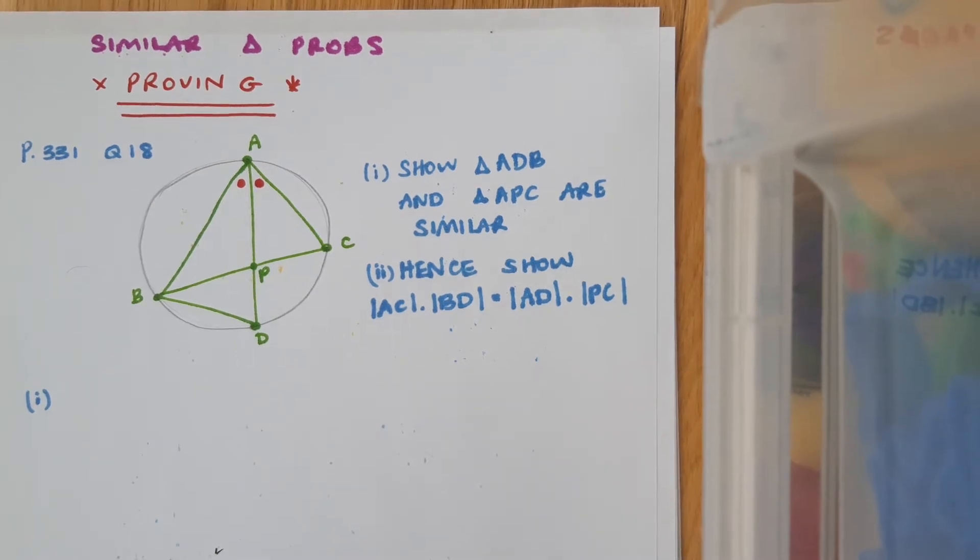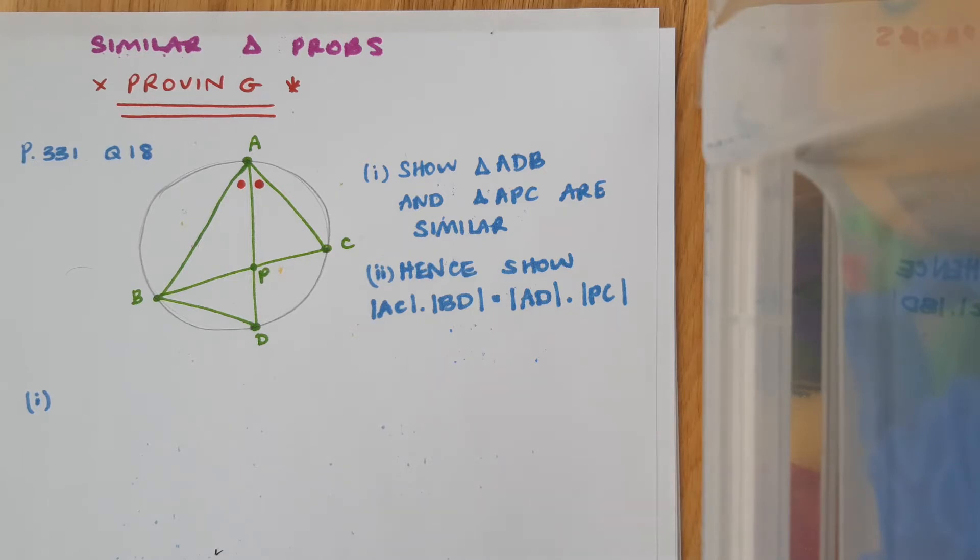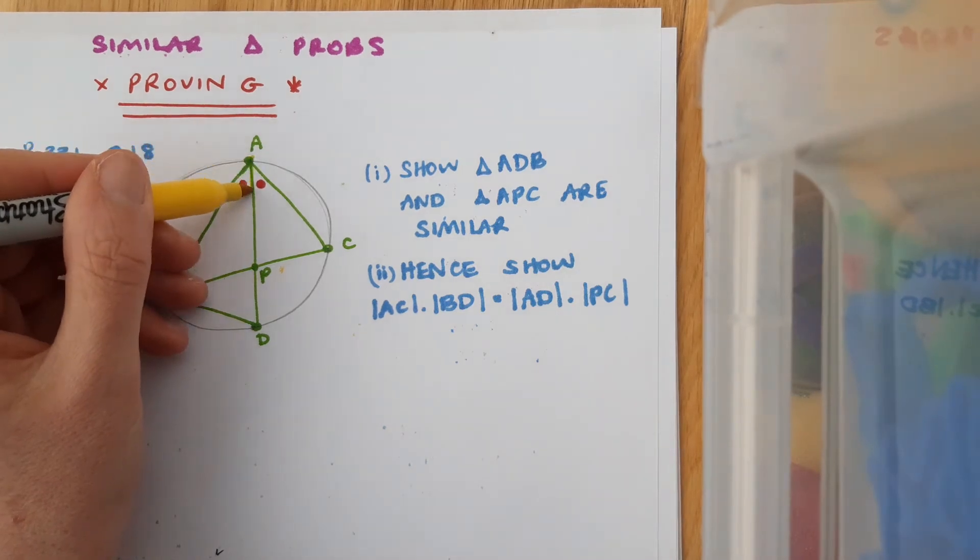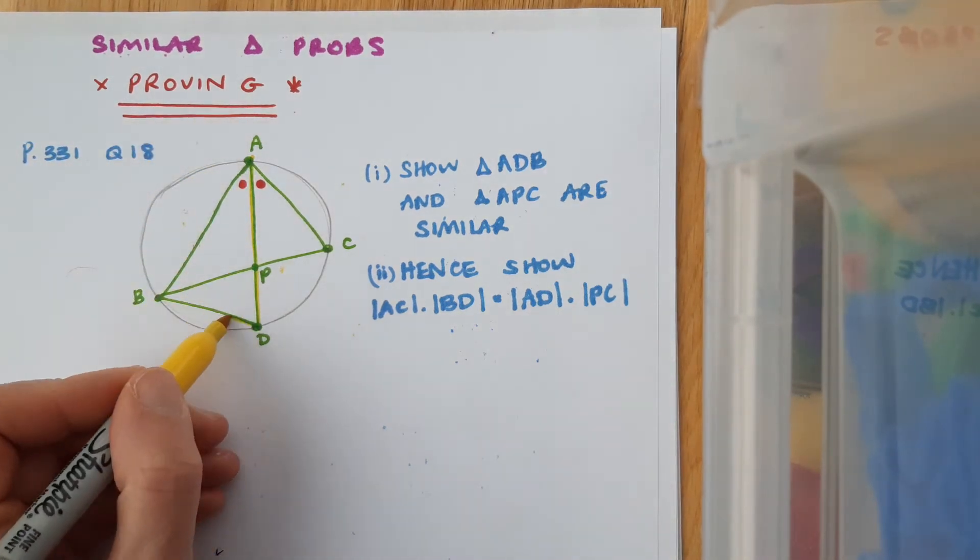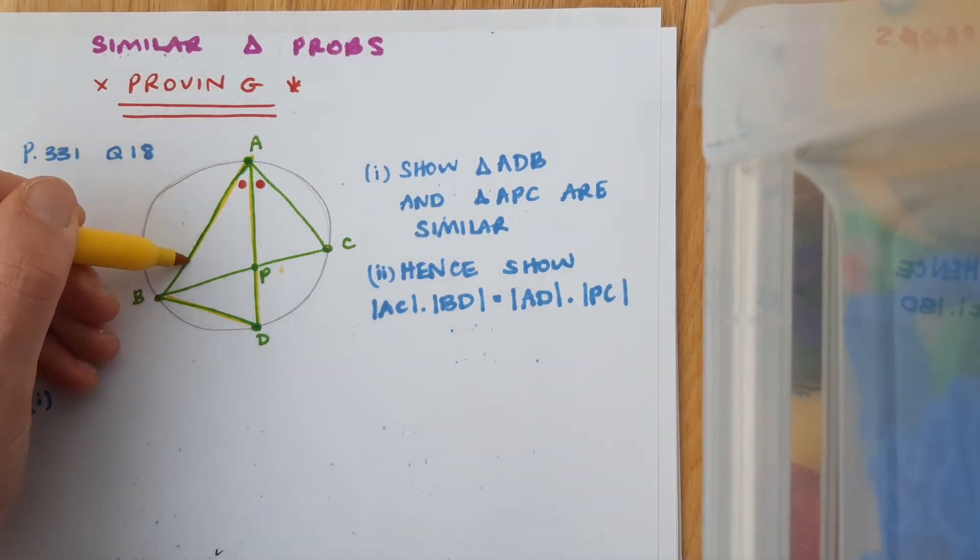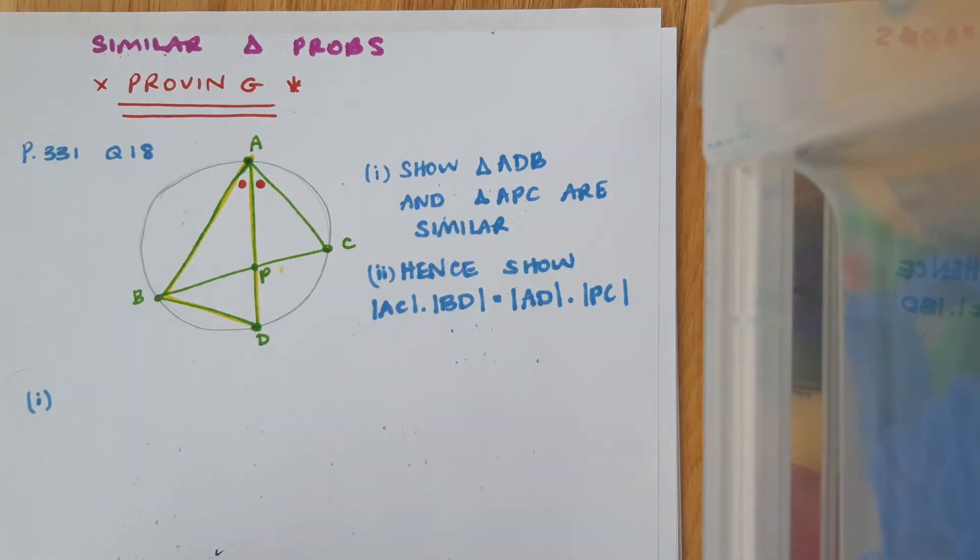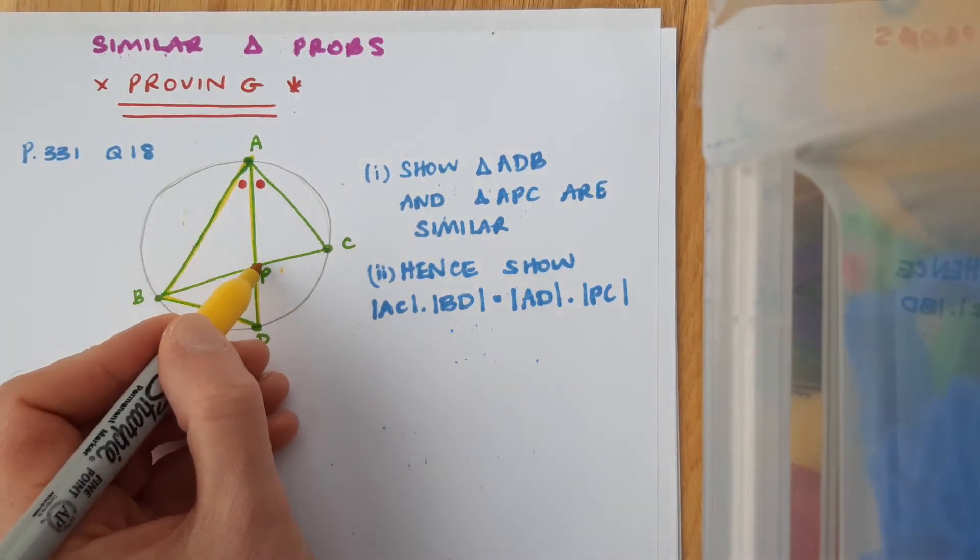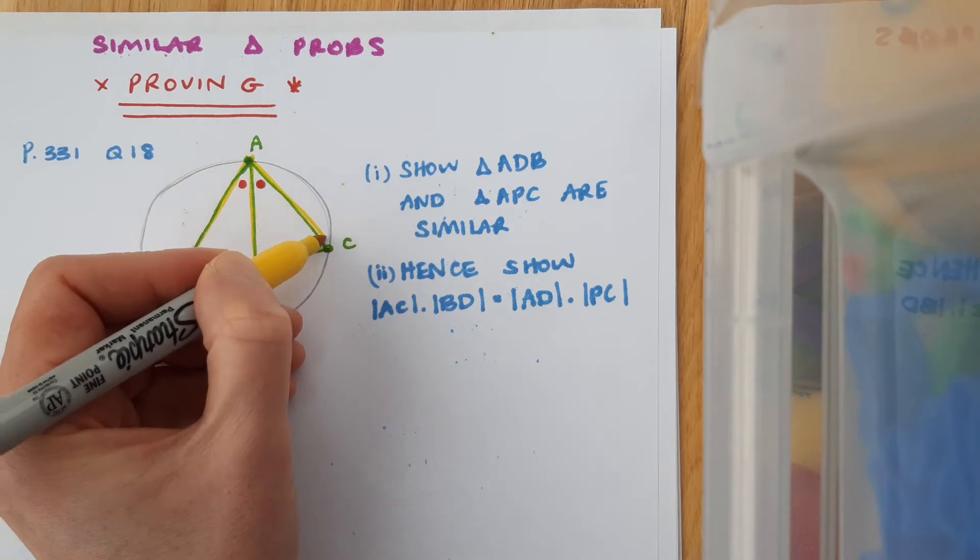There are two parts in this question. First of all, we want to show that triangle ADB and triangle APC are similar. So looking at our diagram, let's identify where those triangles are first. Triangle ADB is actually a big triangle here on the left-hand side, and triangle APC is this triangle here on the right of the diagram.